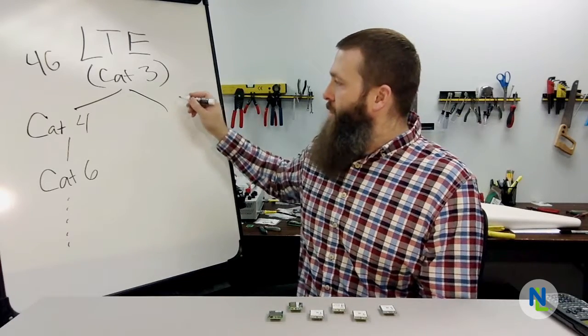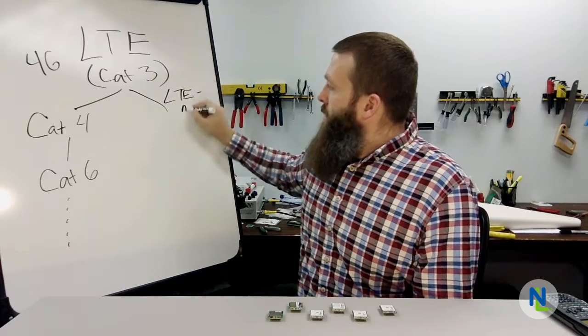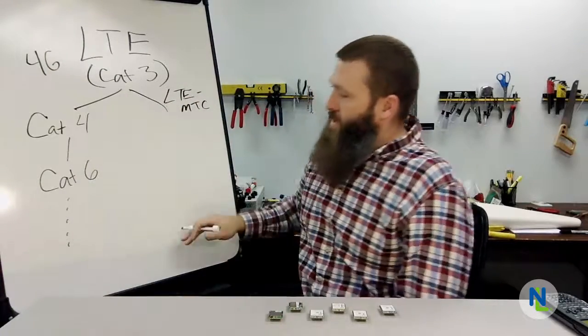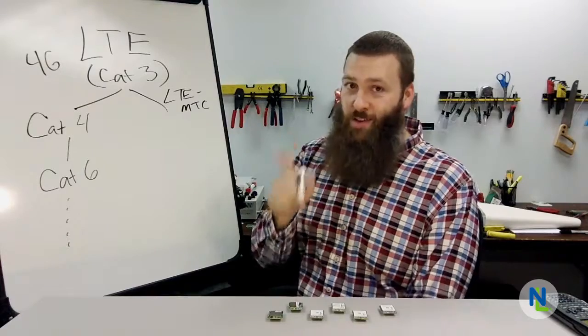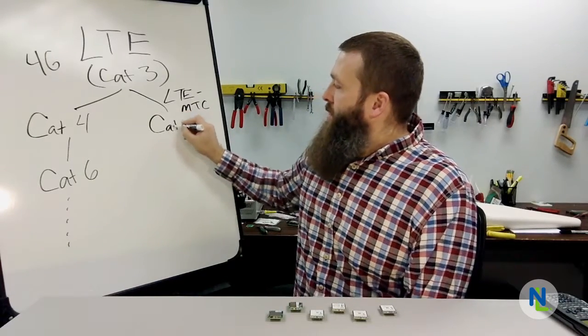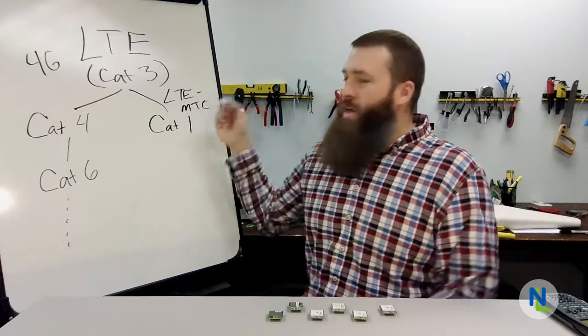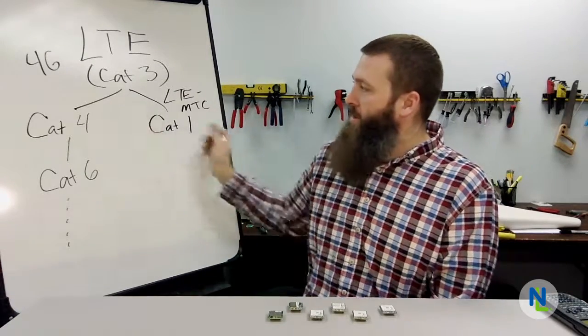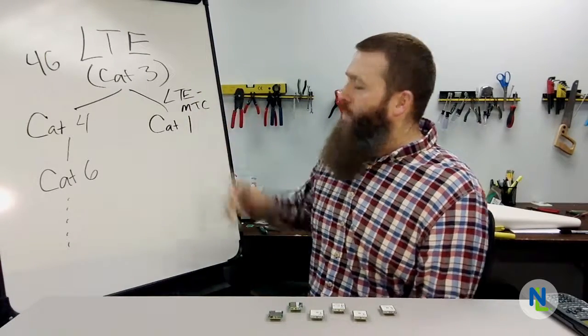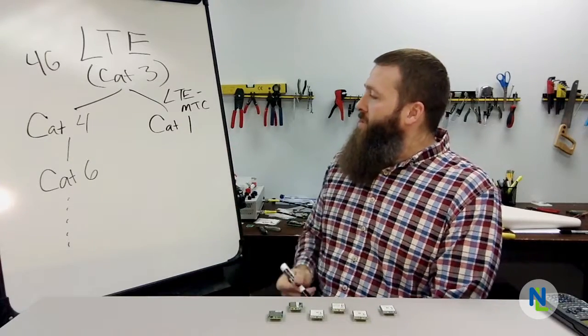What came out was something called LTE MTC, machine type communication. So this is a divergent path, another way of doing things. But guess what? The terminology still stays just as friendly for the most part. From Cat 3, there was a Cat 2, but everybody skipped that. So then we have Cat 1. Cat 1, numerically, it's a smaller number, also means it's a slower speed. Cat 1, we're talking about 10 megabits per second, still pretty fast.